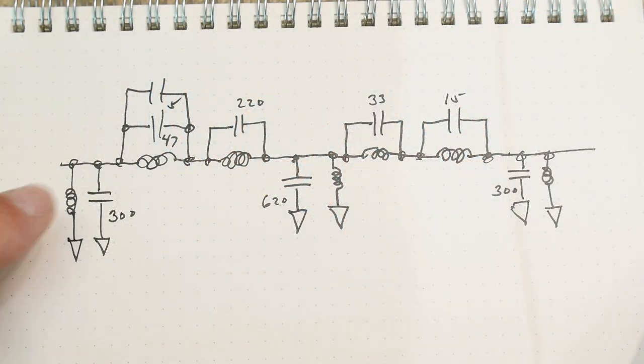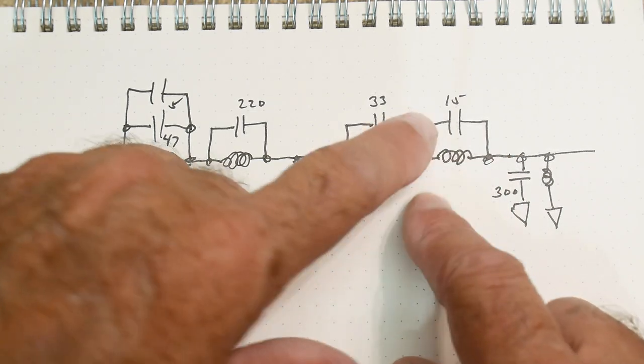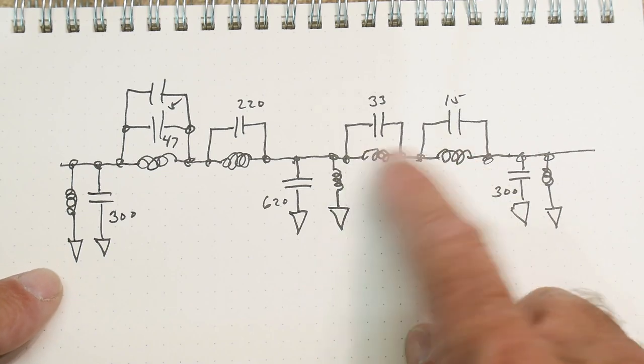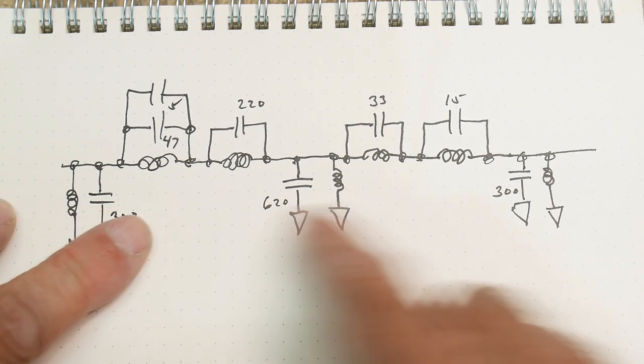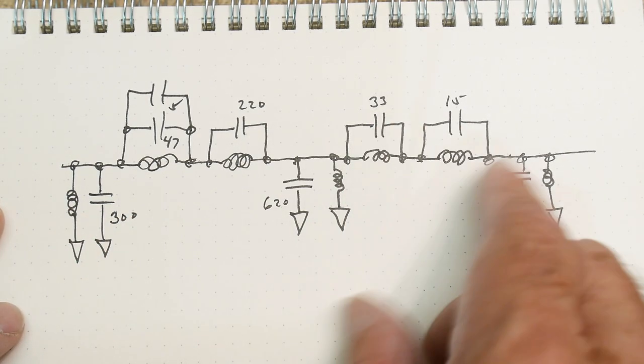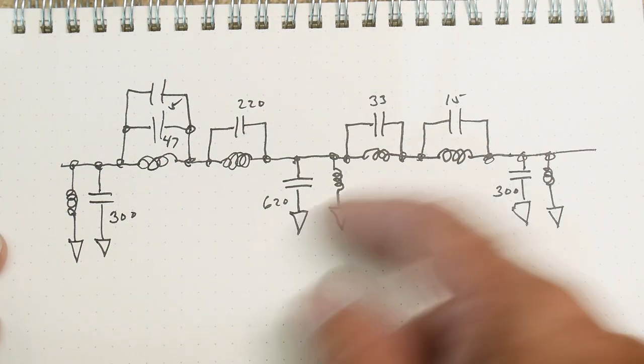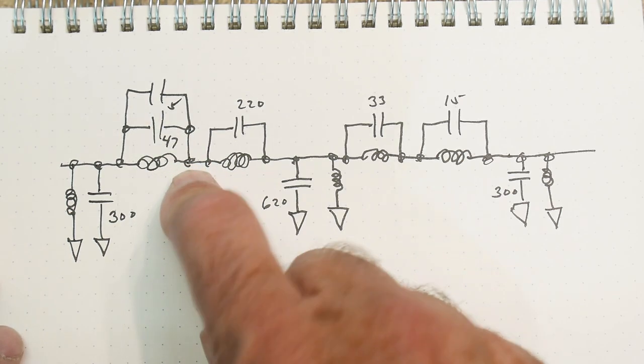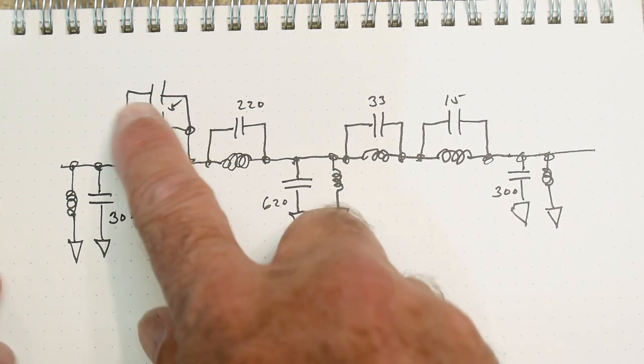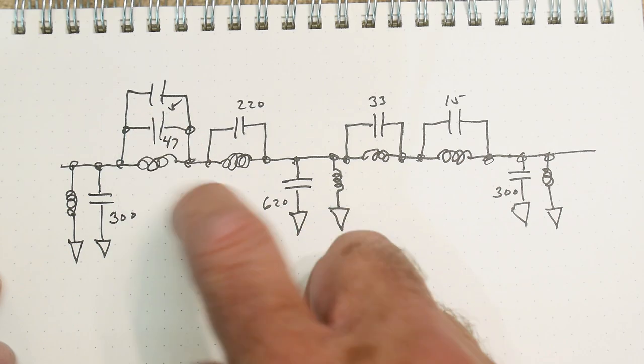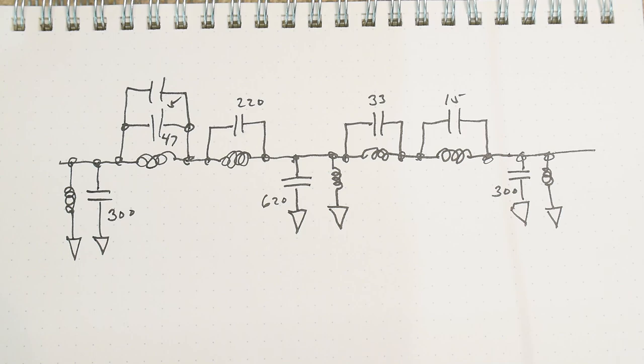There you go, the schematic. Looks like an interesting filter - these two inductors back to back. Usually there's a capacitor to ground between these things, but these are just in series. 300, 620, 300 picofarads, 220, 33, and 15. This must be the high section, this must be the low section to create the bandpass. You need a high filter and a low filter to overlap. This little extra capacitor was put on to move things around and bring it into spec.